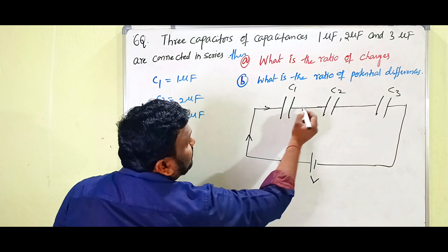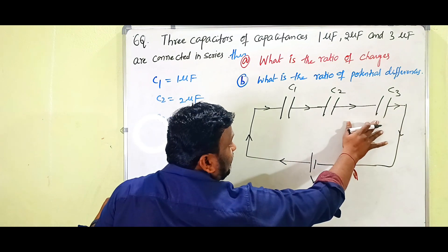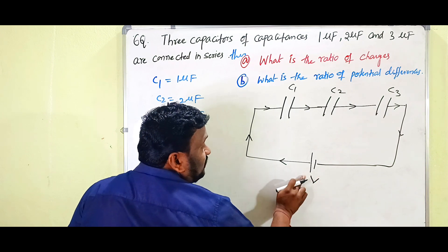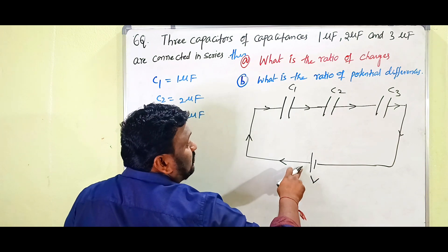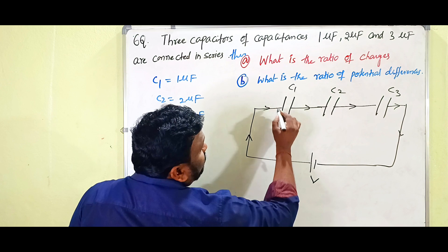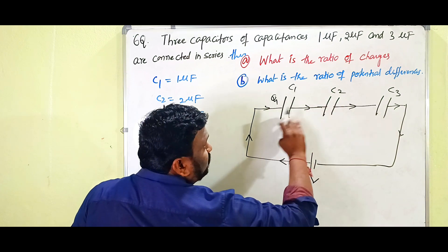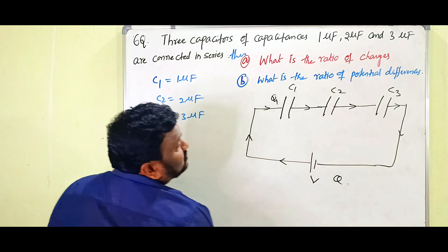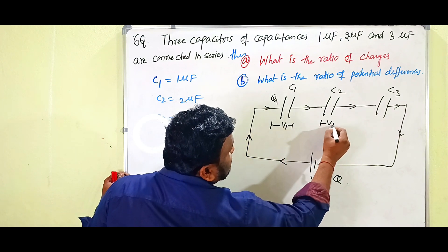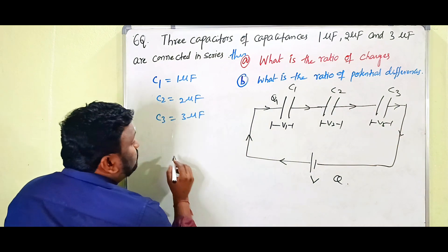The battery potential is V. In series combination, charge is constant — the charge available on every capacitor is the same as the charge supplied by the battery. In series, current travels only a single path, that's why the charge on every capacitor is the same. So the charge on C1 is Q1, on C2 is Q2, on C3 is Q3. The potential across C1 is V1, across C2 is V2, and across C3 is V3.